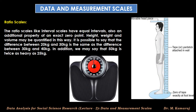Next, ratio scales. Ratio scales are like interval scales — they have equal intervals — but also have an additional property of an exact zero point. Height, weight, and volume may be quantified this way. It is possible to say that the difference between 20 kg and 30 kg is the same as between 30 kg and 40 kg, and also that 50 kg is twice as heavy as 25 kg. These variables can be meaningfully added, subtracted, multiplied, and divided. Central tendencies can be measured by mean, median, and mode, and measures of dispersion such as standard deviation and coefficient of variation can also be calculated from ratio scales.